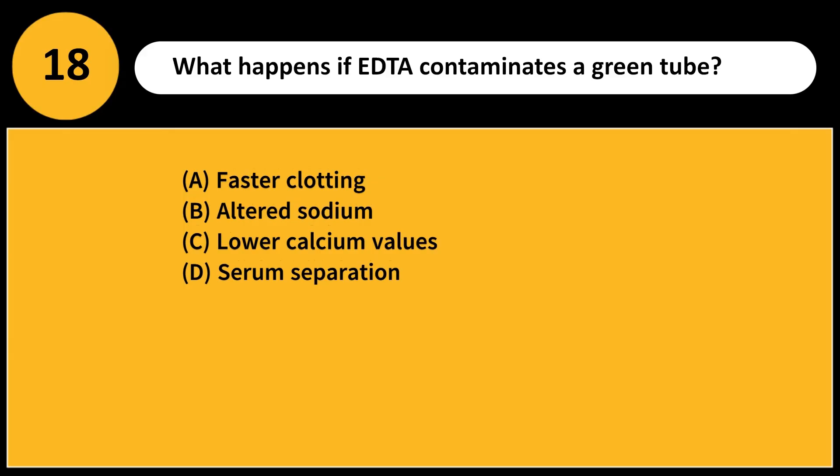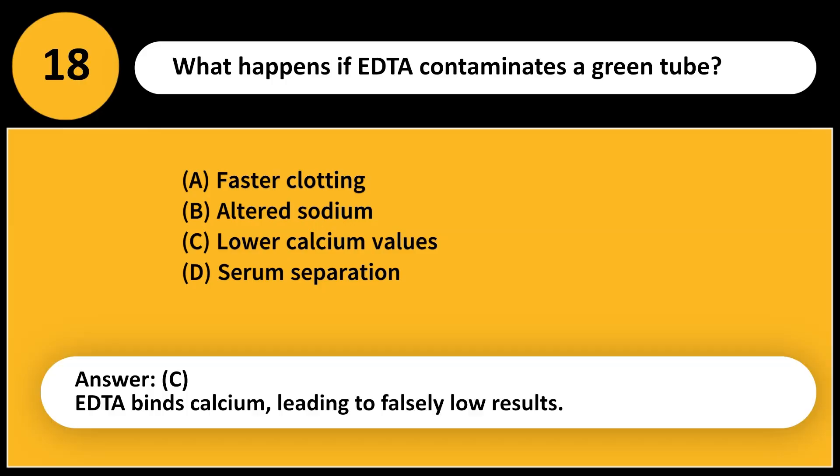What happens if EDTA contaminates a green tube? A. Faster clotting. B. Altered sodium. C. Lower calcium values. D. Serum separation. Answer: C. EDTA binds calcium, leading to falsely low results.